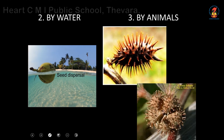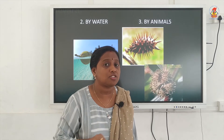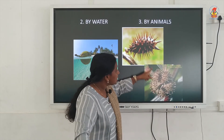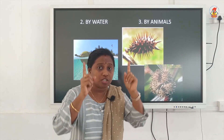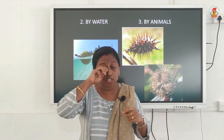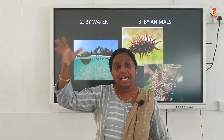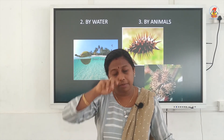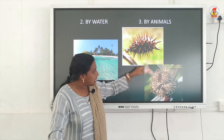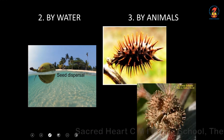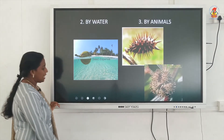The third agent of dispersal is animals. When animals are the dispersal agent, seeds should have special structures like hooks and spines so they can cling on to the body of an animal and be taken away to different places. The first example is the seed of Xanthium, and the second is Urena seeds. Both Xanthium and Urena are dispersed by animals.